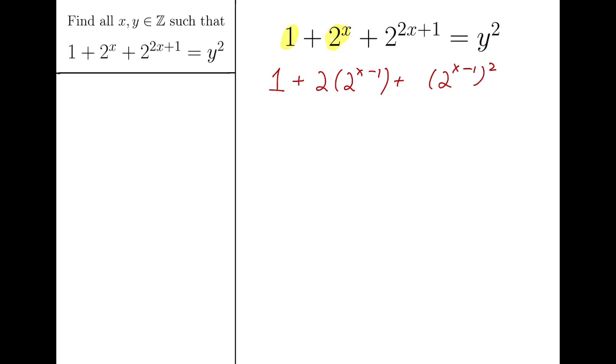Now the equation becomes 1 plus 2 times 2 to the x minus 1 plus 8 times 2 to the x minus 1 whole squared equals y squared. Then I can complete the squares, which gives me 1 plus 2 to the x minus 1 whole squared plus 7 times 2 to the x minus 1 whole squared equals y squared.